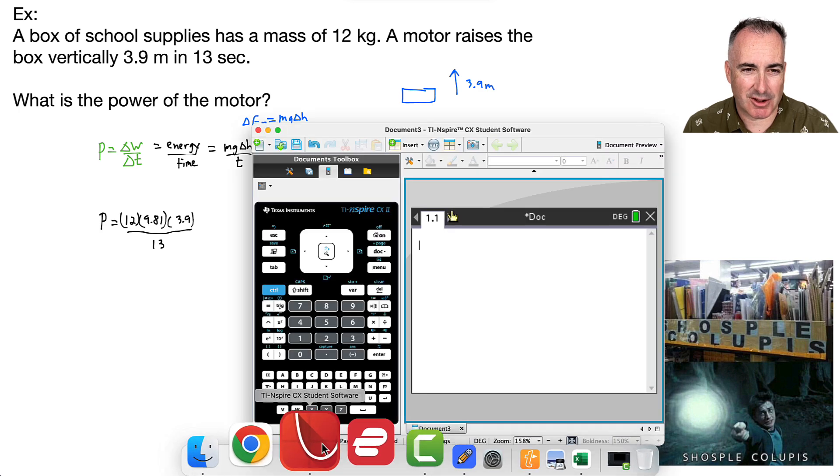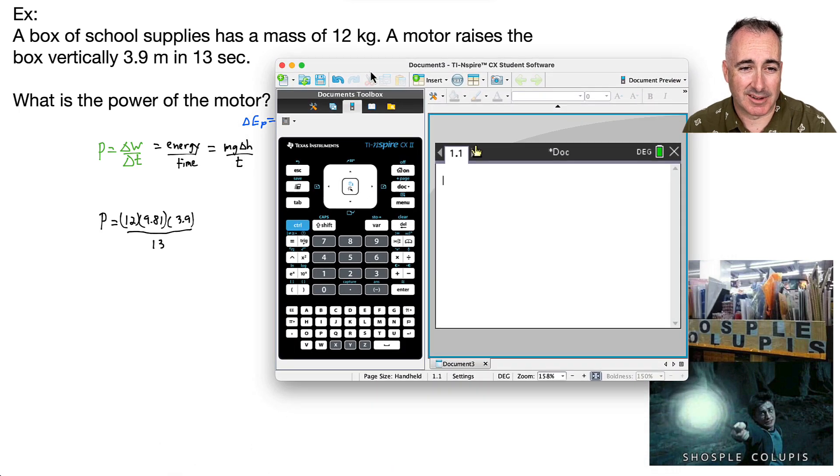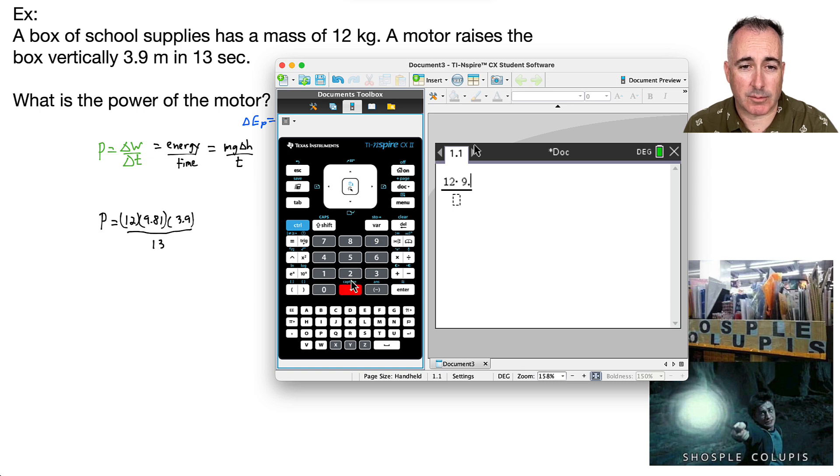It's actually that easy. So see, once you conceptually solve this question, there's nothing to it. So I'm just going to make a pretty fraction here and say 12 times 9.81 times 3.9 and all that divided by 13. Press enter and I get 35.316.